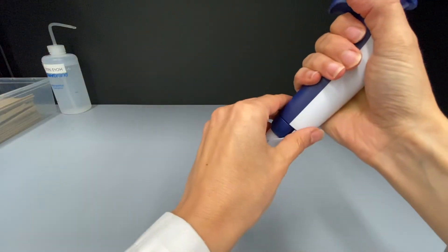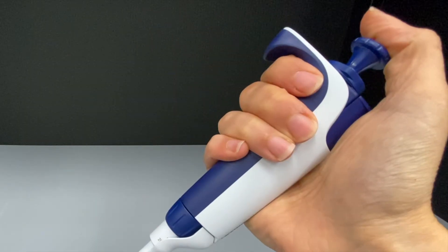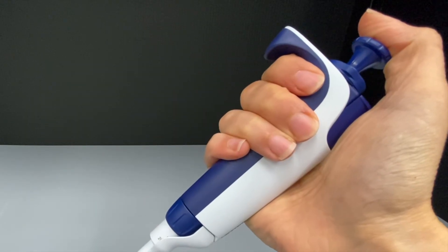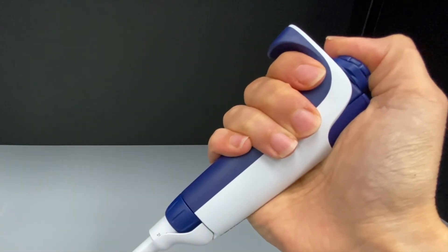The next step is to understand how the plunger works. There are three positions. First there is the resting position, the next position is the first stop and the last position is the second stop.